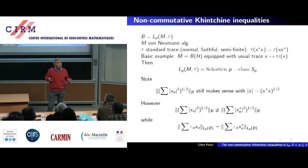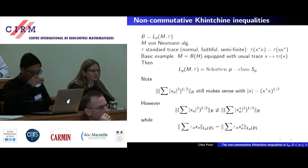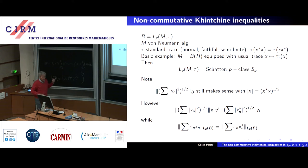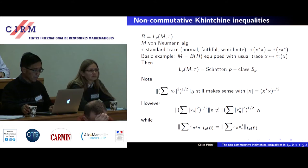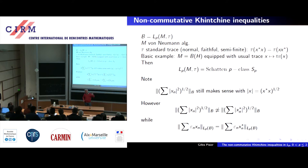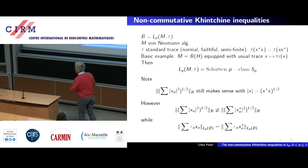If you are not comfortable with the Schatten P class, you can even take T to be just a matrix. The key point is that we want inequalities independent of the size of the matrix — all constants must be independent of the matrix size. Essentially everything interesting already appears in this matrix case, which is really the main case.